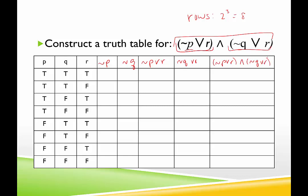Now filling in the columns: not p is the opposite of p — four falses then four trues. Not q is the opposite of q. For not p or r — an or — one or the other must be true: false or true is true; false or false is false; false or true is true; false or false is false; true or true is true; true or true is true; true or true is true; true or true is true.